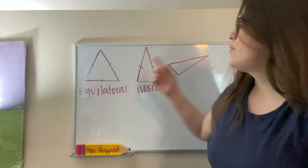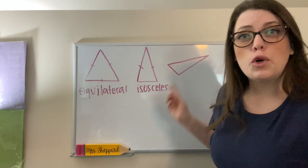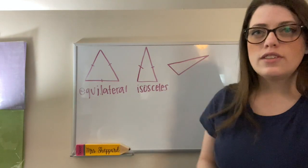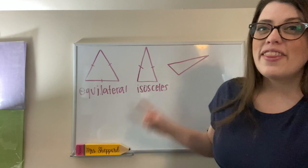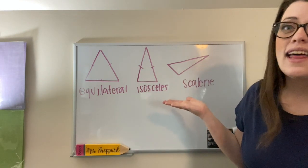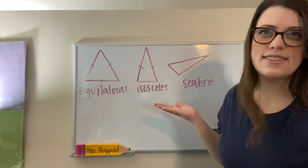And finally, on this triangle, none of the sides match. So all three sides are different lengths. We call this triangle a scalene triangle. That means that none of the sides are the same.